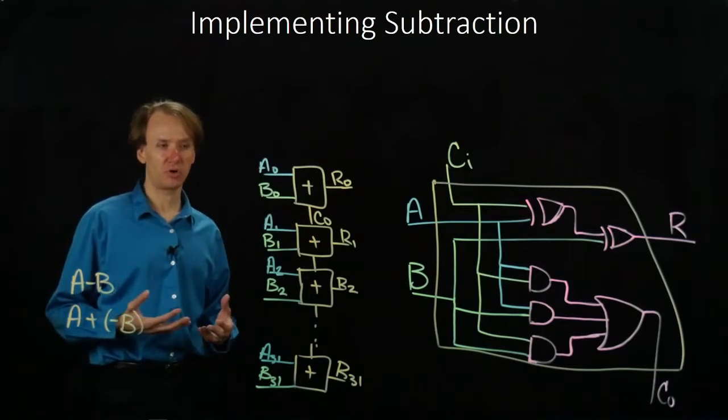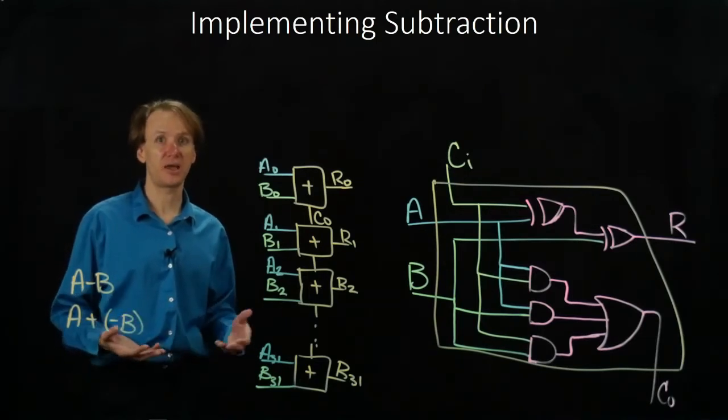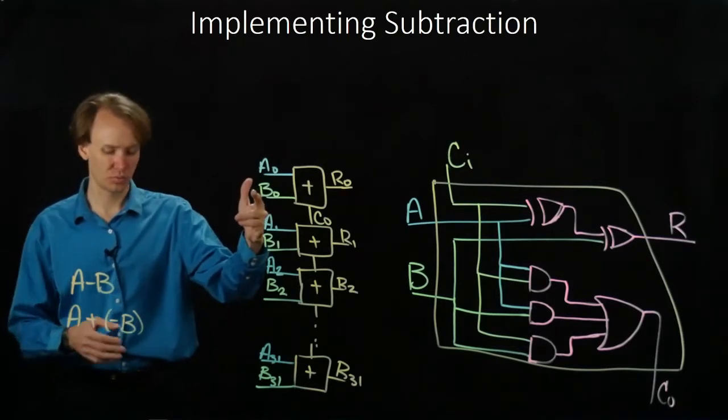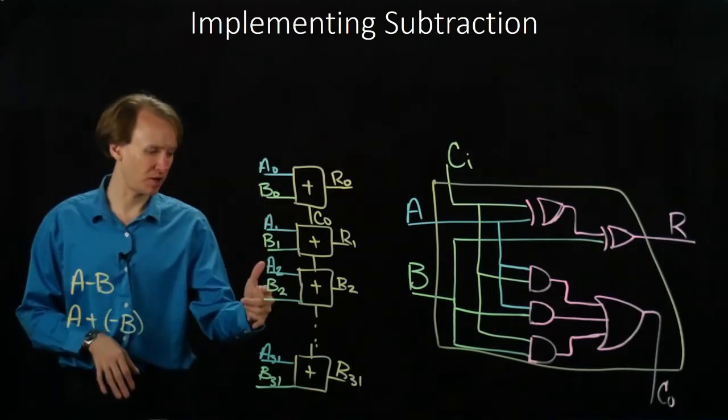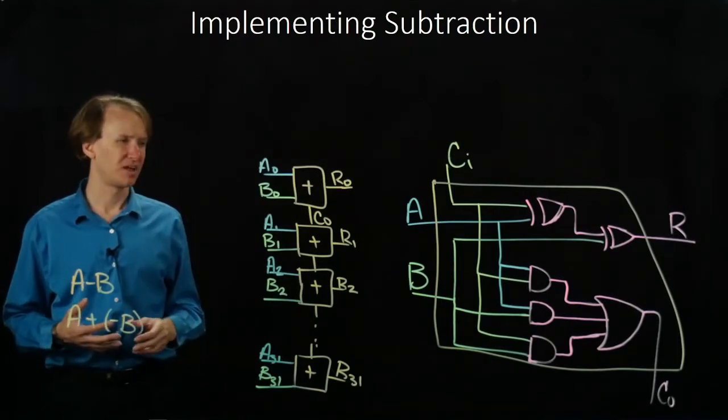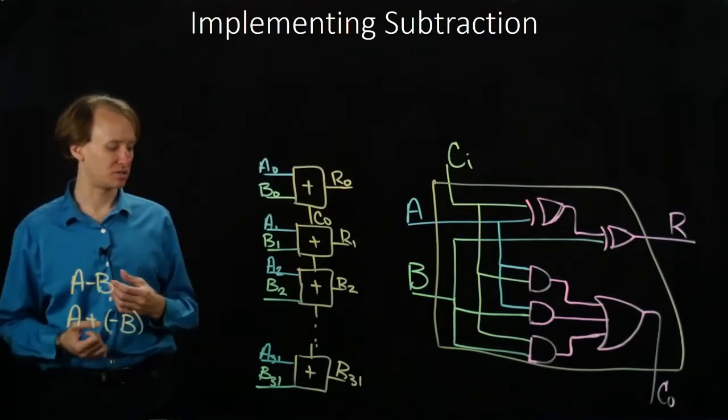So our 2's complement operation says flip all of the bits and add 1. So we want to do negative B, so we'd have to find all of these Bs, invert them, and then we need to add one more to this thing.